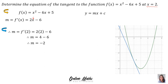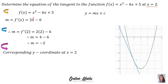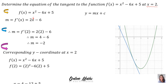Step 3: work out the corresponding y-coordinate at x = 2. We take the original function and substitute x = 2: 2² - 6 × 2 + 5 = 4 - 12 + 5 = -3. So the corresponding y-value is -3, giving us the point (2, -3). Looking at the sketch, that matches the location of our tangent point.